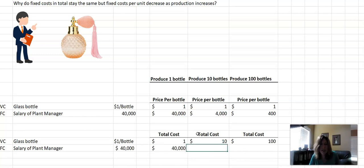If you produce one, it's $40,000. If you produce 10, it's still $40,000 in total. And if you produce 100, it's still $40,000. So in total, fixed costs stay the same, but per unit, they go down.